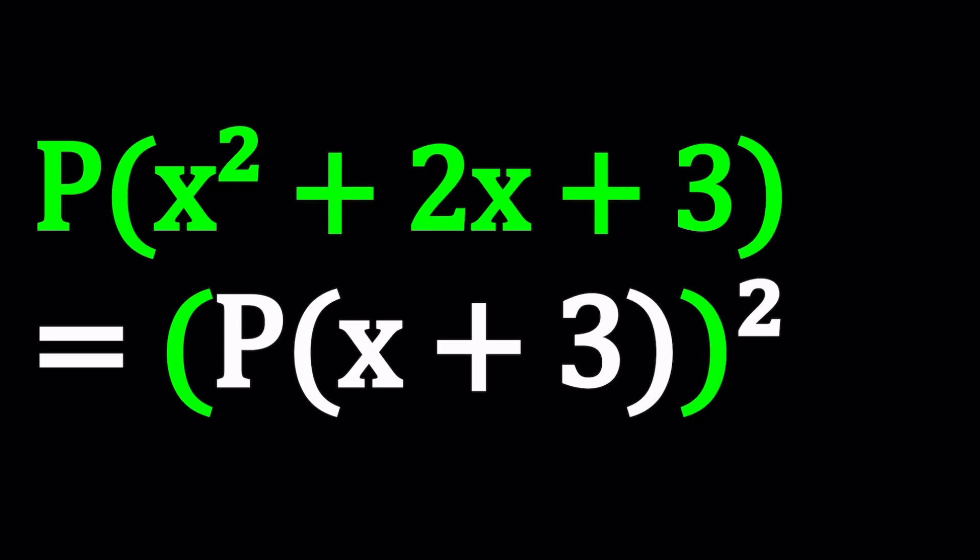Hello everyone. In this video we're going to be solving a nice polynomial equation. We have P(x² + 2x + 3) equals P(x + 3) squared, and we're going to try to find all polynomials that satisfy this equation. Are there any solutions? What kind of polynomials are solutions? How many solutions are there? We're going to try to answer those kinds of questions.